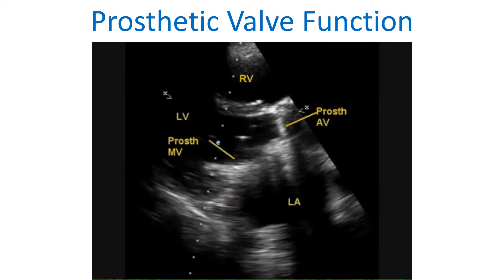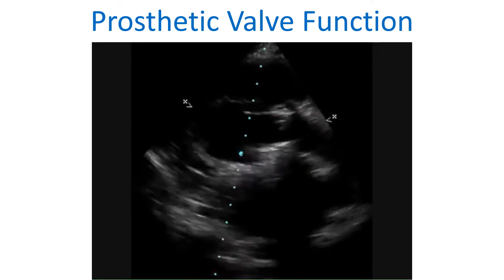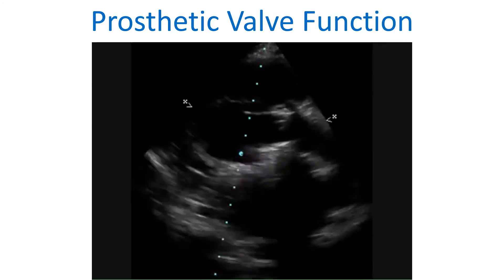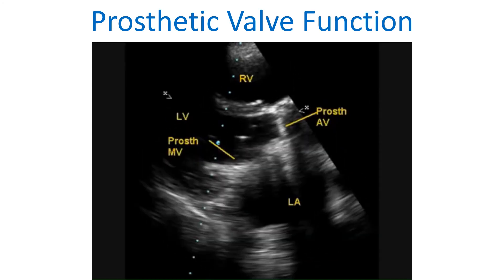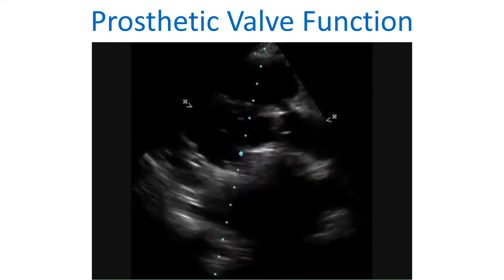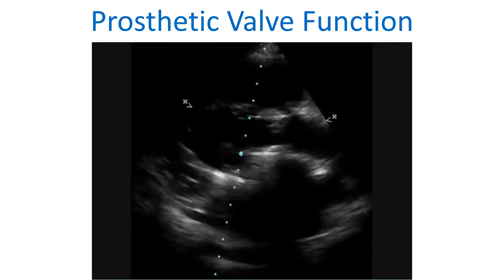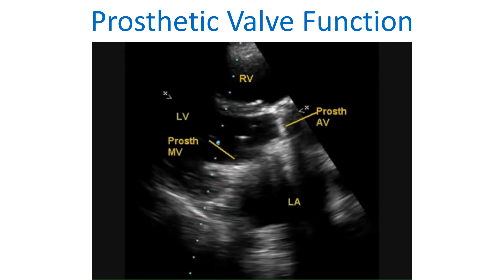Parasternal long axis view of echocardiogram in double valve replacement. Mitral and aortic valves are prosthetic, as evident from the dense echoes due to the metallic components of the prosthetic valves. Acoustic shadowing is seen below the prosthetic valve. RV: right ventricle; LA: left atrium; LV: left ventricle; PROSTH MV: prosthetic mitral valve. The left atrium is dilated, possibly as a residual of the previous lesions which made double valve replacement necessary.